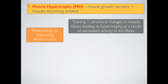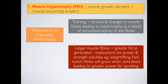This leads to an improved level of performance because larger muscle fibres are able to generate greater levels of force. If an athlete is involved in a power or strength activity such as weightlifting, the muscles will experience hypertrophy gradually along the way, leading to greater levels of strength. When applying progressive overload, fast twitch muscle fibres grow when stimulated during powerful activities in training, leading to greater power for sprinting.